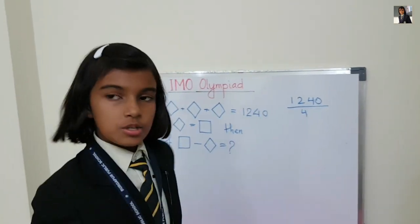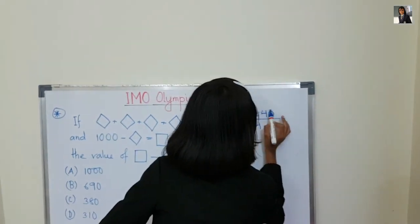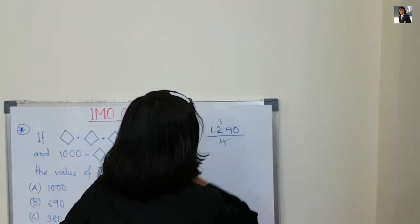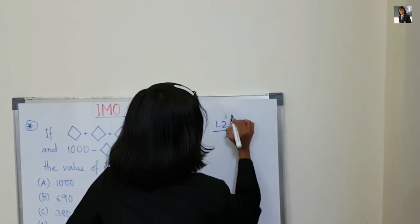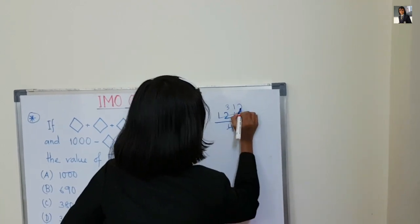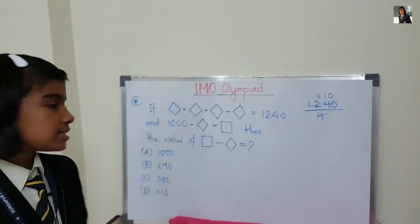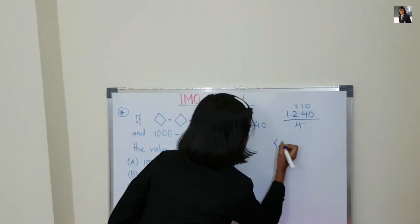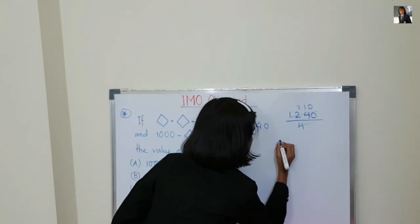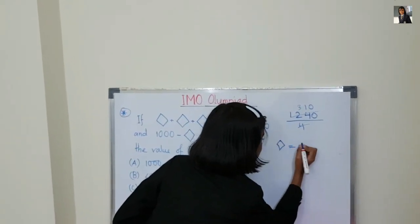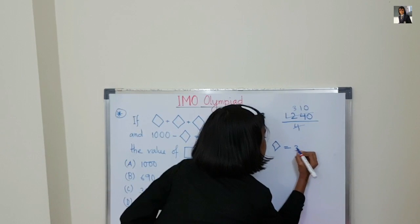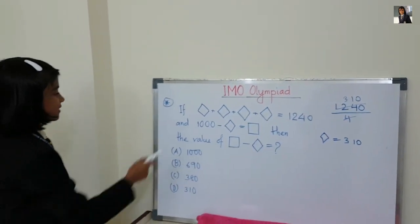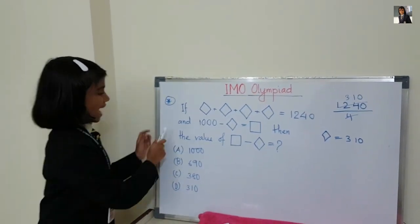1240 divided by 4: four goes into 12 three times, four ones are four, and zero — so it comes to 310. The value of one diamond is equal to 310.